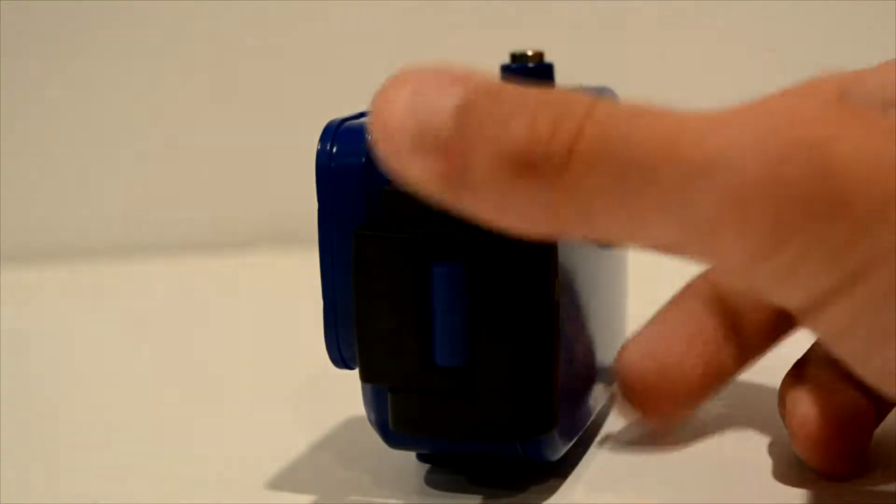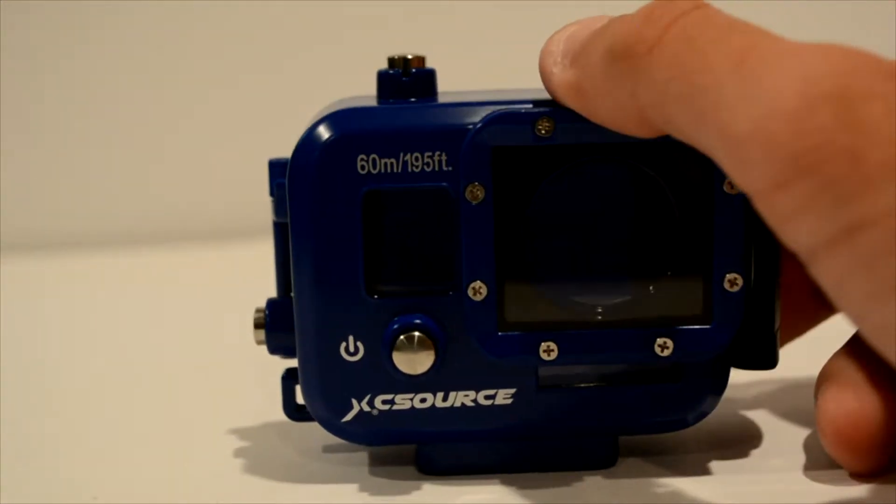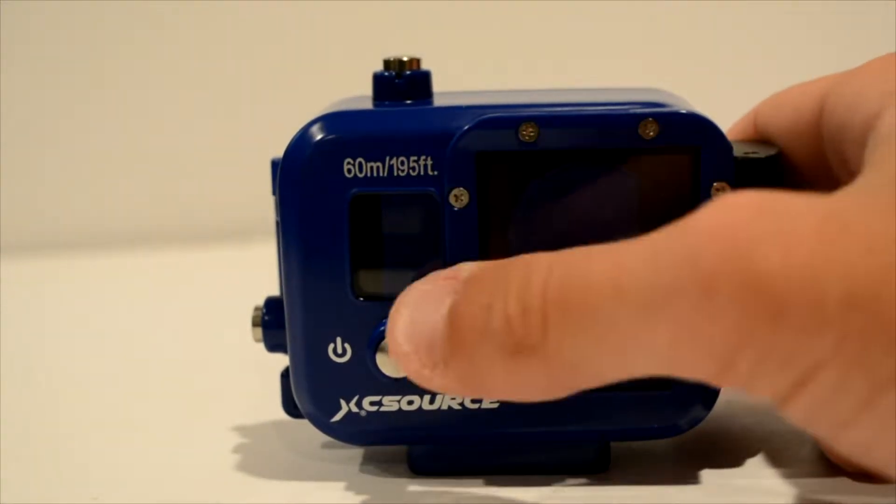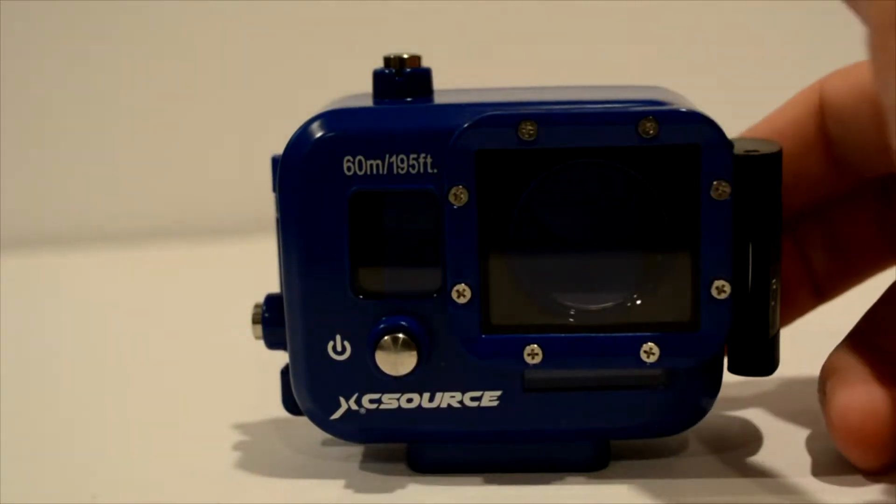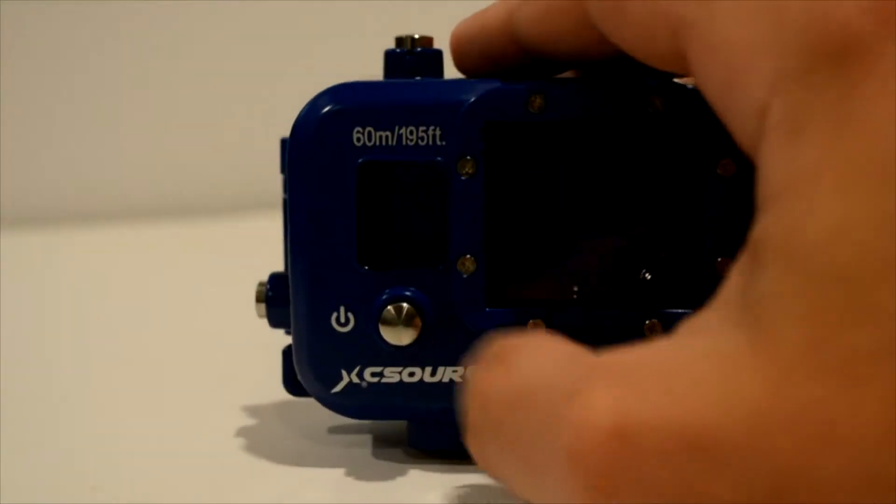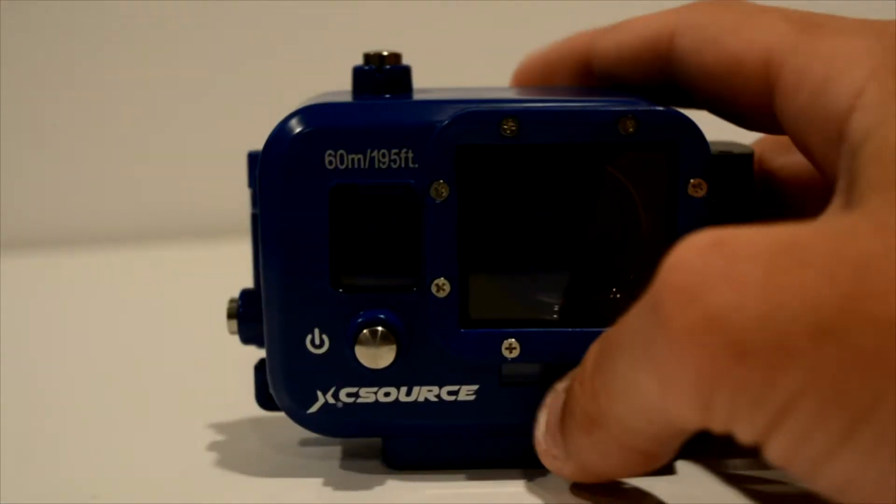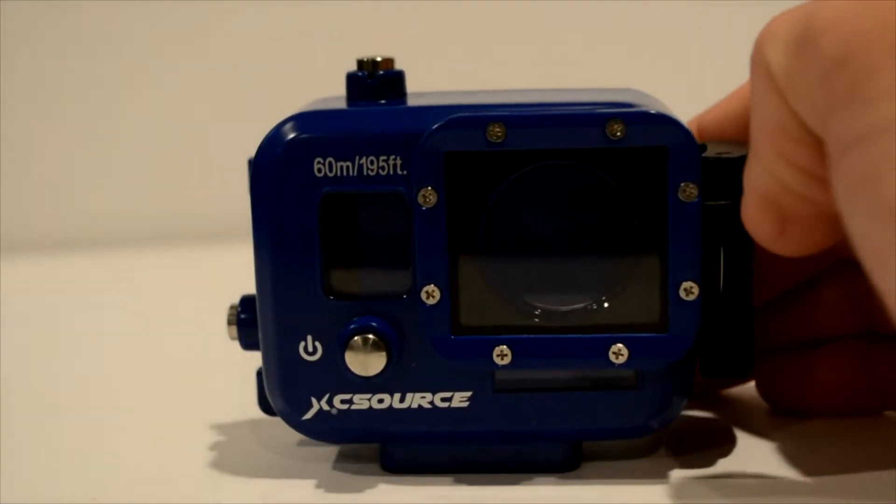So this is a really nice aftermarket case for your GoPro camera. It's going to come in tons of different colors. I chose the blue. It's from XC Source. As you can see, it's 60 meters or 195 feet, that's how deep it can go in the water. And it has all the buttons and everything normal as a GoPro case, but it has a little bit different that I do not like about it.